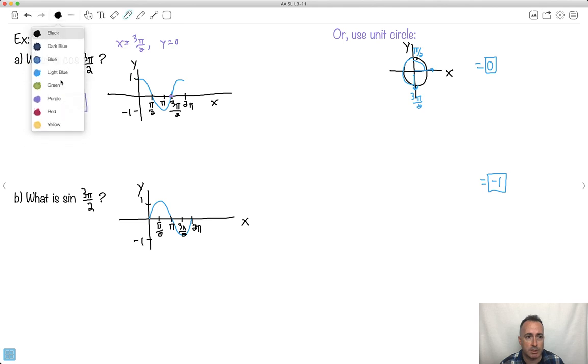Well, remember though, we still are going to use this idea that this is the x value. So x is 3 pi over 2. When we do that, what's the y value? Well, when x is 3 pi over 2, let's see here. When x is 3 pi over 2, the y value is negative 1. So that's why the answer is negative 1.